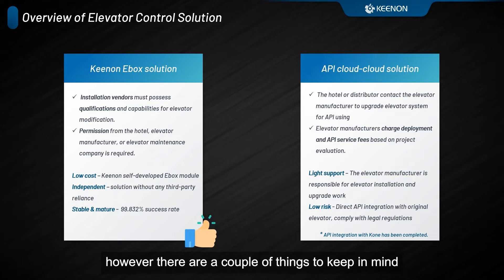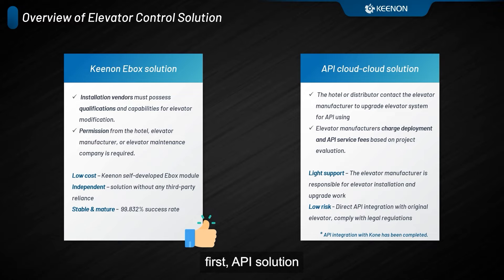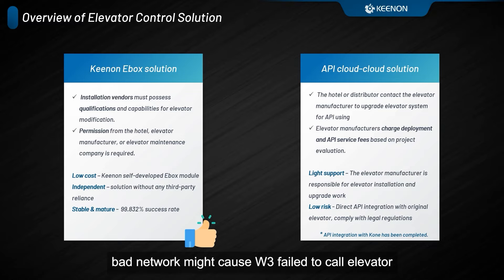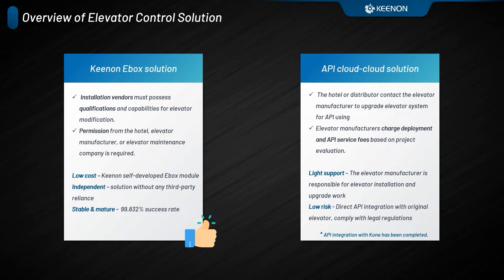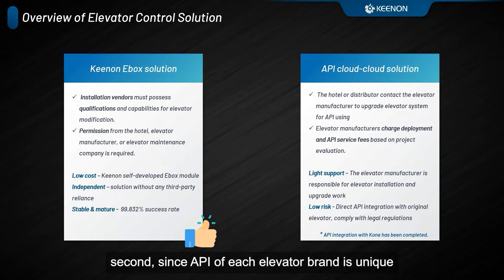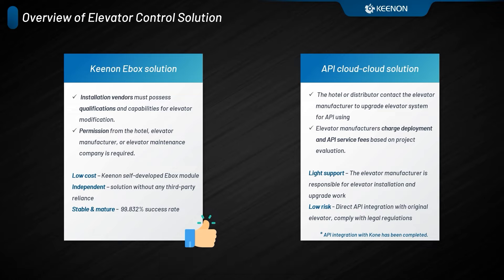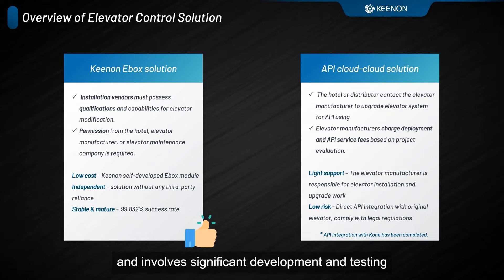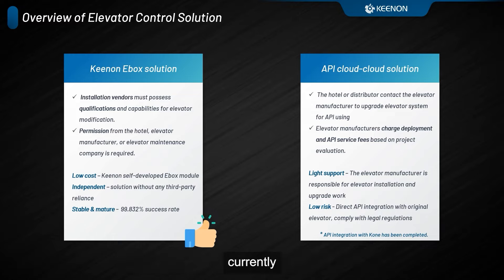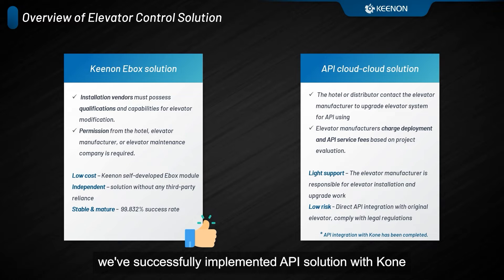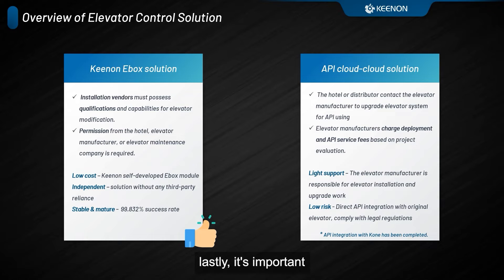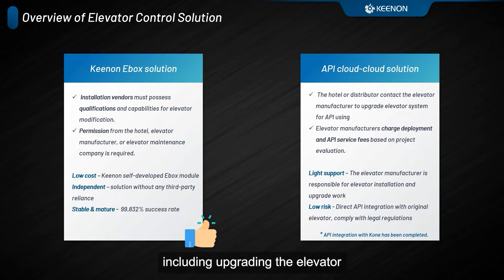However, there are a couple of things to keep in mind. First, the API Solution will be a bit sensitive to the quality of the network environment — bad network might cause W3 to fail to call the elevator. Second, since the API of each elevator brand is unique, we have to develop them one by one. This process is quite time-consuming and involves significant development and testing. Currently, we've successfully implemented the API Solution with Kone, and we're actively working on making it work with Otis. Lastly, elevator manufacturers may charge the hotel for various things, including upgrading the elevator system and using their API.